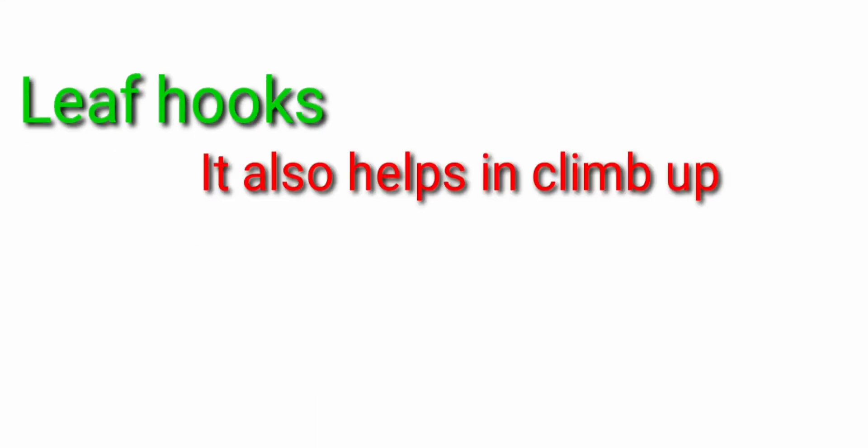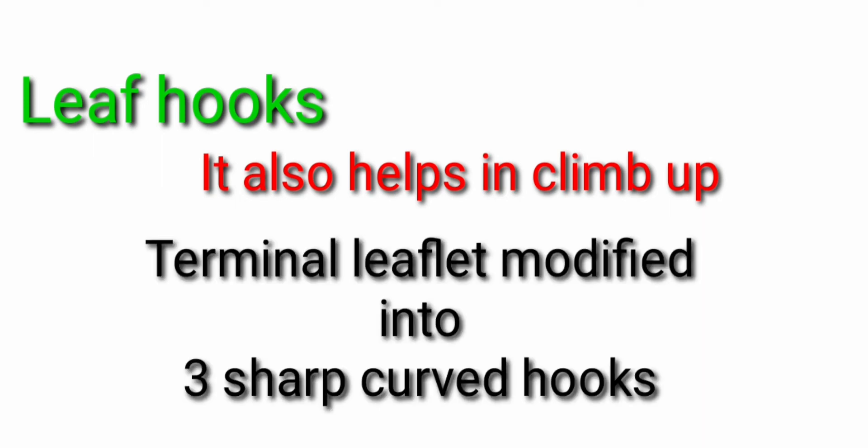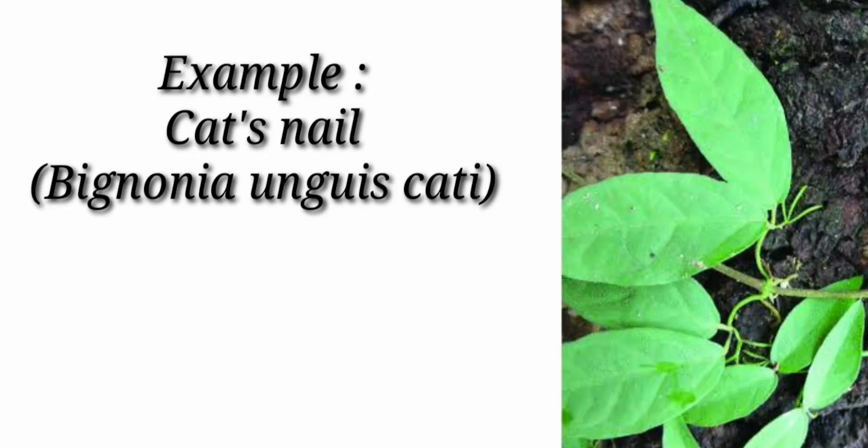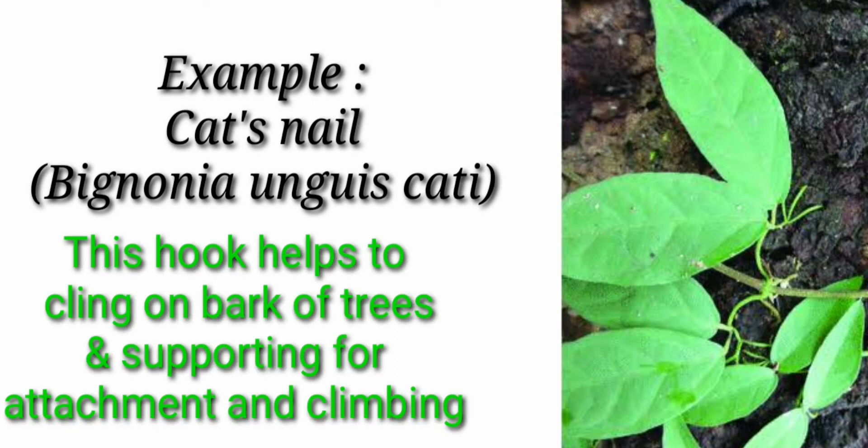Next we are going to see about the leaf hooks. It also helps in climbing up of the plant as tendrils do. Terminal leaflet is modified into three sharp curved hooks in cat nails. Cat nails is a plant which is having weakened stem. Its binomial name is Bignonia unguis-cati. This hook helps to cling on bark of tree and support for the attachment and climbing. The hooks present in the cat nails help to hold on the bark of tree and give the support to climb up.